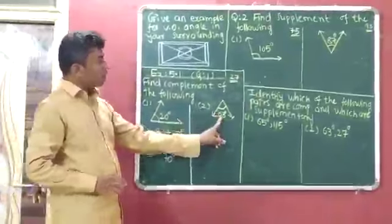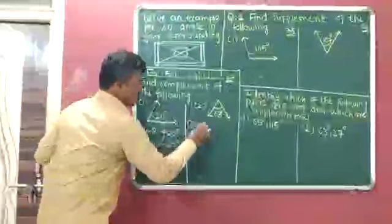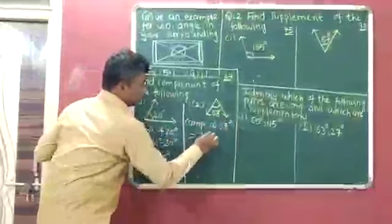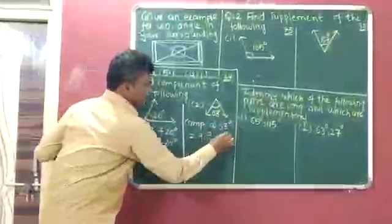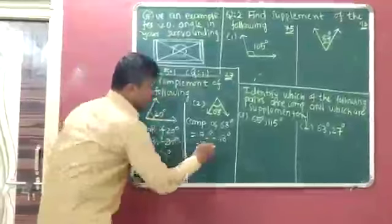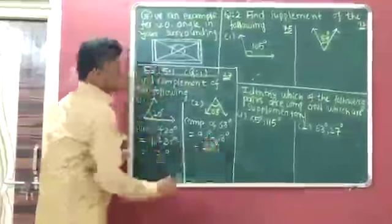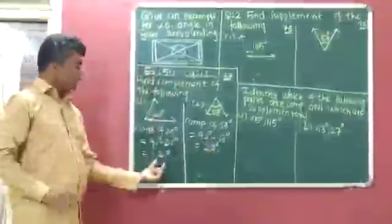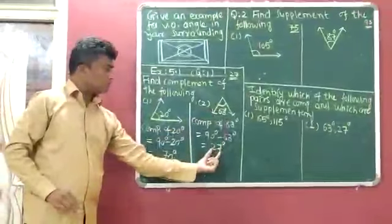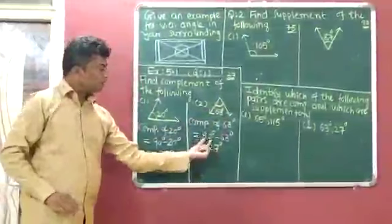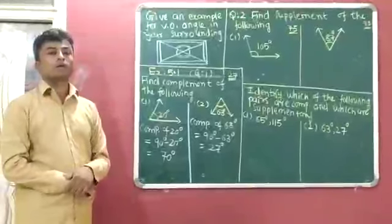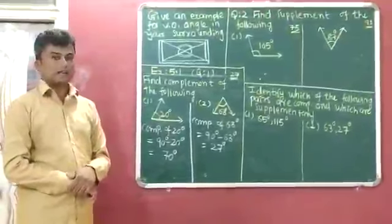Second: complement of 63 degrees. Complement of 63 degrees is equal to 90 degrees minus 63 degrees, which equals 27 degrees. So complement of 20 degrees is equal to 70 degrees, and complement of 63 degrees is equal to 27 degrees. We subtracted both given angles from 90 degrees because the sum of measures of two complementary angles is 90 degrees.